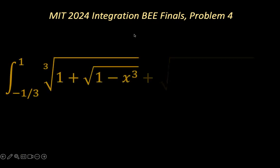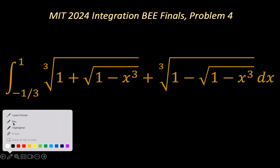So today's problem comes from the MIT 2024 integration BEE finals, and the problem will be problem number four, which is the definite integral from x equals negative a third to x equals one of the cube root of one plus square root of one minus x cube plus the cube root of one minus the square root of one minus x cube.